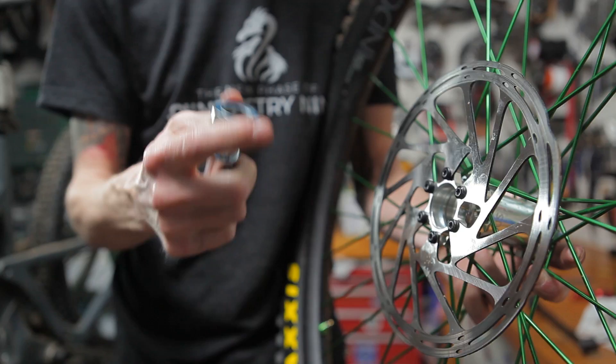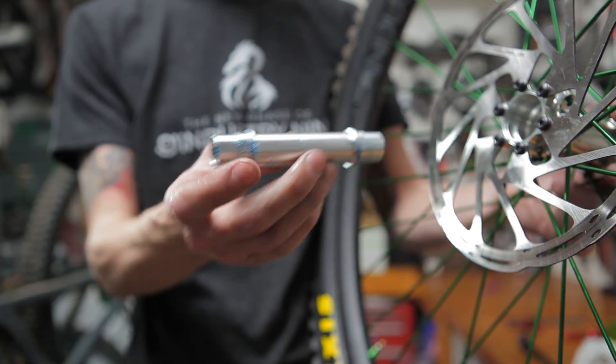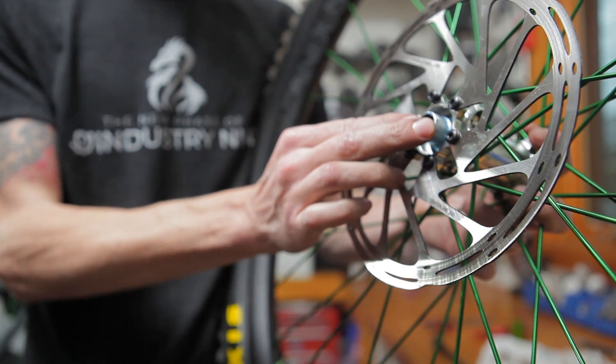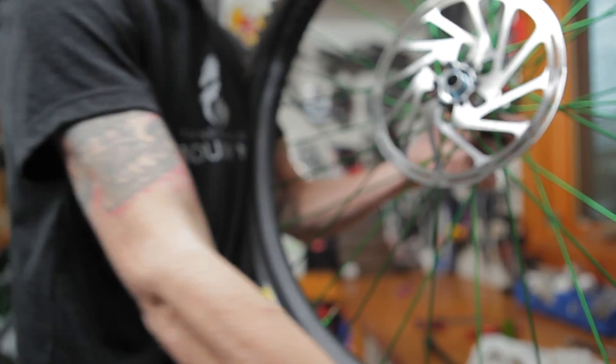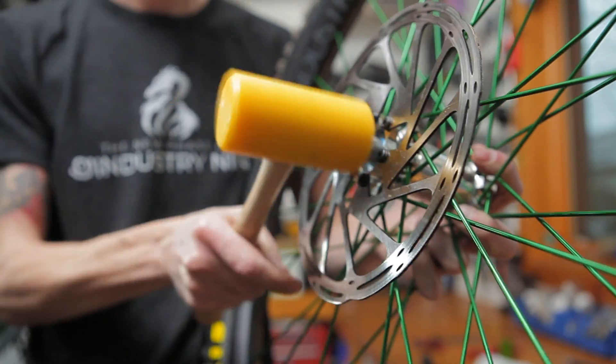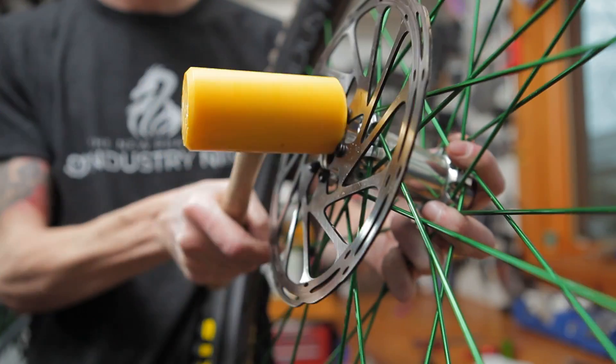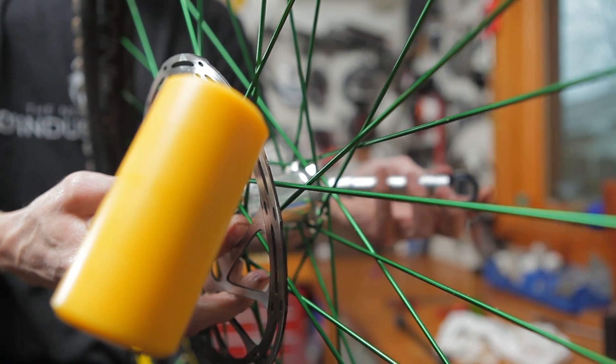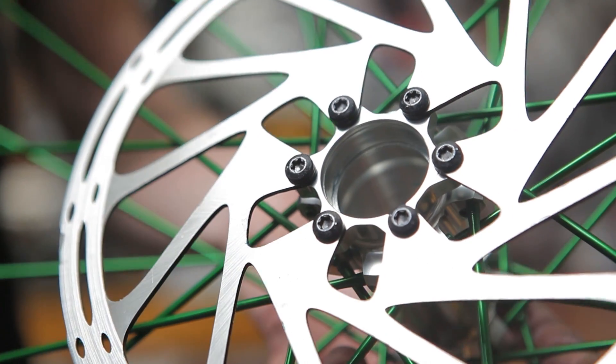With one bearing out of the way, reinsert the axle and strike it from the opposite side to get the other bearing free. Wipe the bearing seats and hub shell clean.